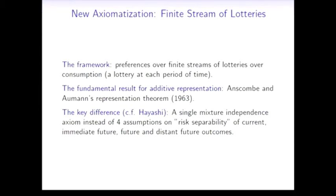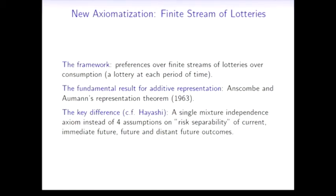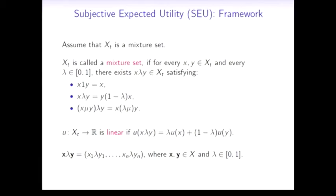The advantage here when we work in this setting is that when we apply the mixture axioms, it allows us to give a clear and shorter axiomatization in comparison with Hayashi, for example, where he needs to use four assumptions to obtain the same results. Let's take a look in more detail. First I need to introduce some definitions. The key definition here is that each set of outcomes is a mixture set. The utility function is linear if the following equation is satisfied. Now we are ready to define the mixture of two consumption streams using this notation.